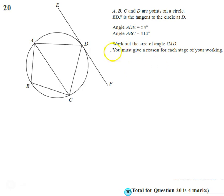We've got a circle here with points A, B, C, and D on the circle. EDF is the tangent to the circle at D. We're given angle ADE is 54 degrees as shown by the diagram, and angle ABC up here is 114 degrees. Let's add that onto our diagram.